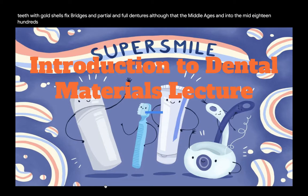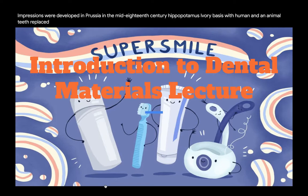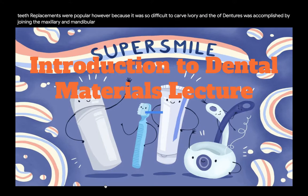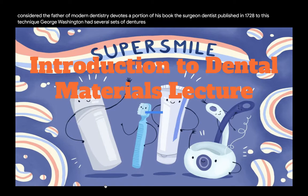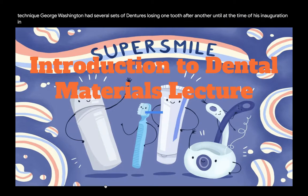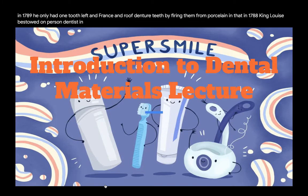By the Christian era, Romans who greatly valued their teeth had become skilled at restoring teeth with gold shells, fixed bridges, and partial and full dentures. Through the Middle Ages and into the mid-1800s, most dental treatment consisted of extraction and artificial replacements. Casts constructed of plaster from wax impressions were developed in Prussia in the mid-18th century. Hippopotamus ivory bases with human and animal teeth were popular, but because ivory was difficult to carve and denture bases did not fit well, spring forces were used to retain the maxillary and mandibular dentures. In 1788, King Louis bestowed on a Paris dentist an inventor's patent for porcelain teeth.